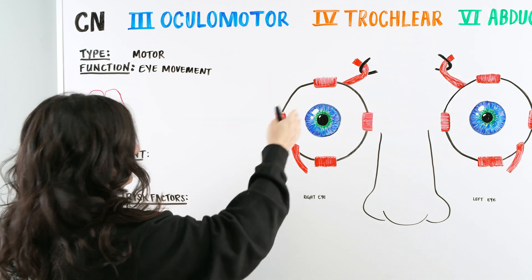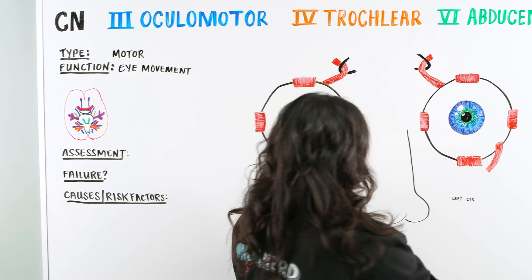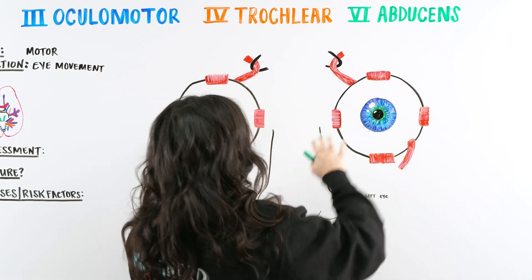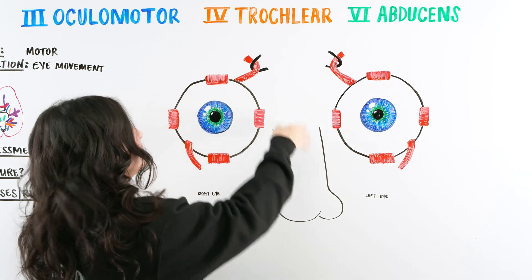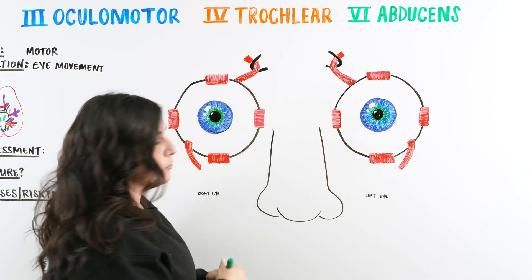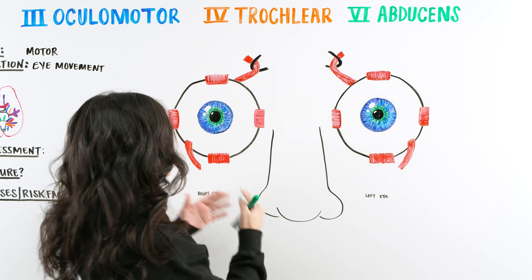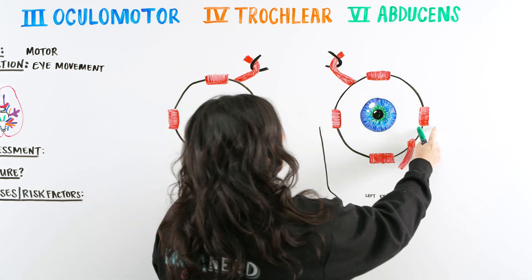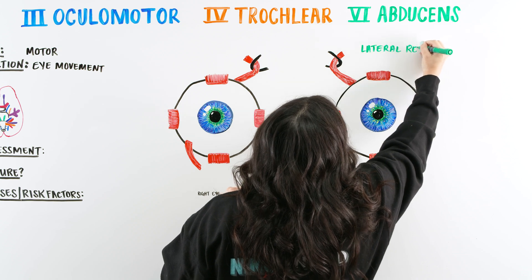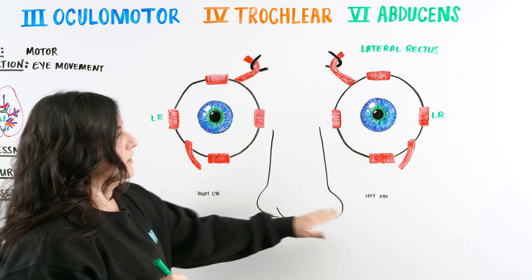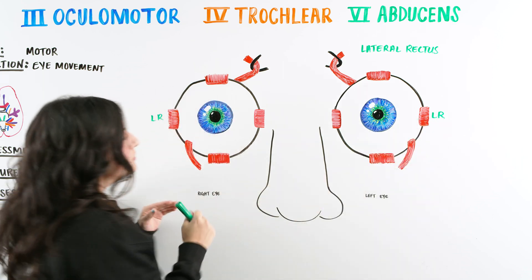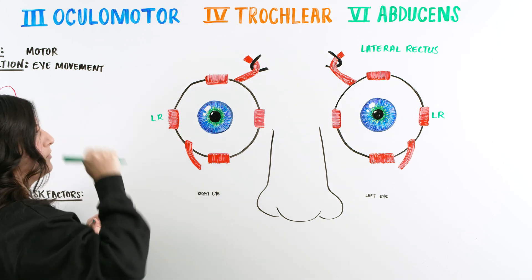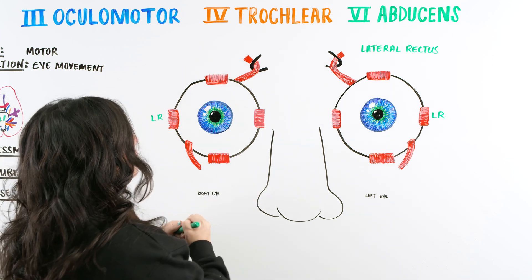As we look at ocular motor, trochlear, and abducens, we're going to start with abducens because it's easy to see the muscles that abducens is controlling. Looking at this diagram, we see there's a bunch of different muscles around the eye. For abducens, the eye movement is going to be working on our lateral rectus. Our lateral rectus muscles are located on the lateral portions of our eyes, allowing the left eye to look lateral on the left side and the right eye to look lateral on the right side. So it's only controlling one movement, along with the trochlear as well.